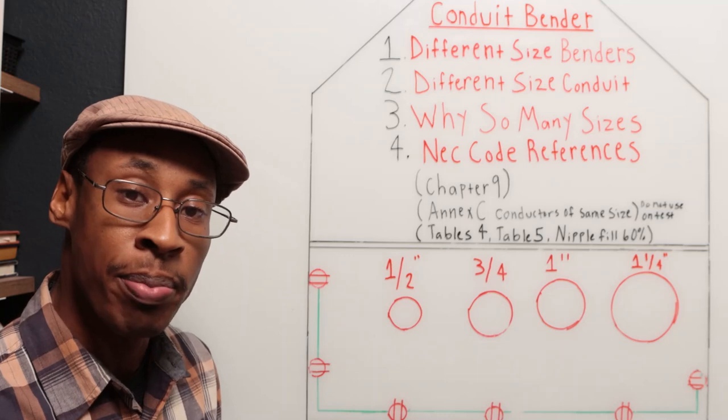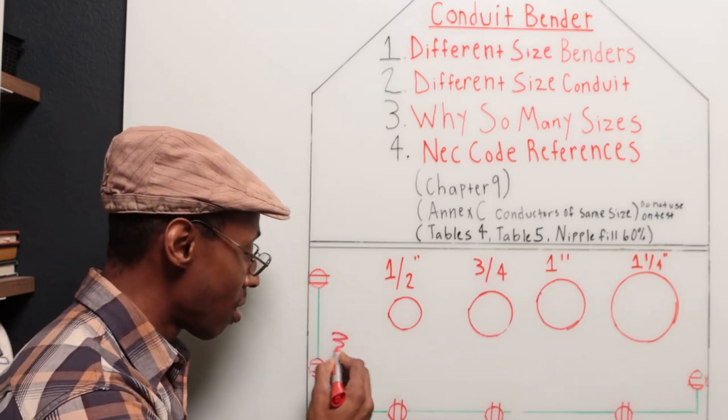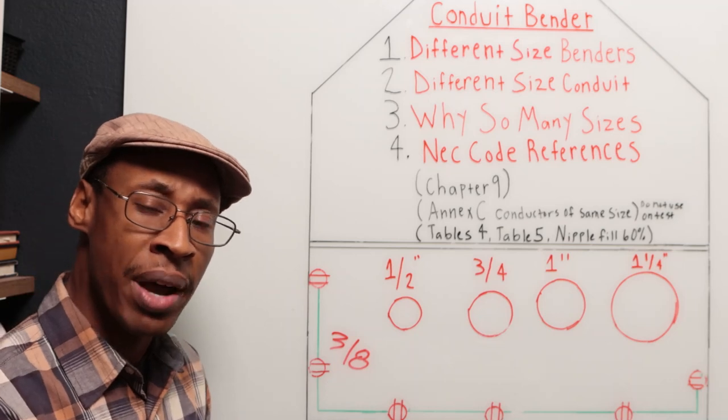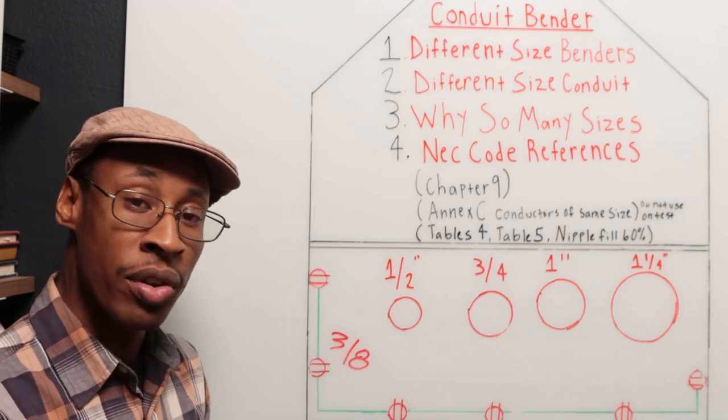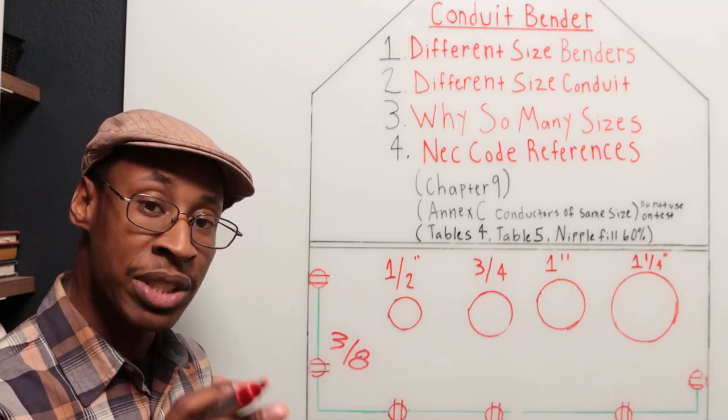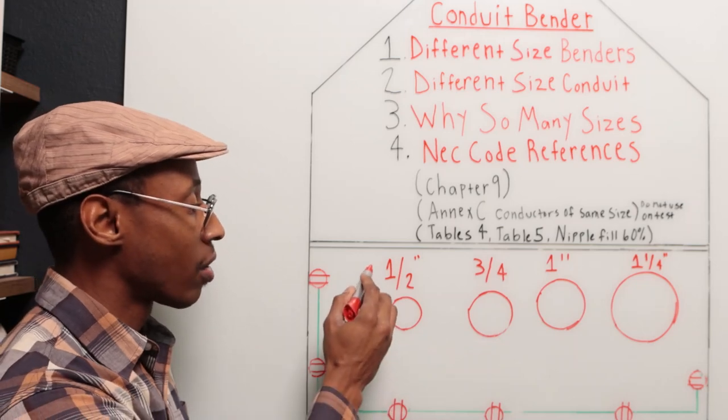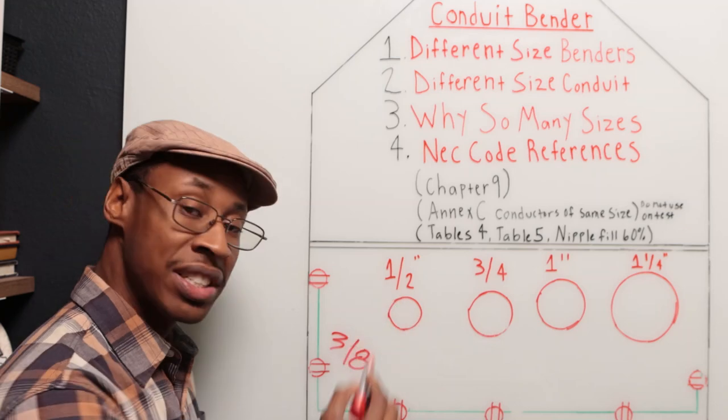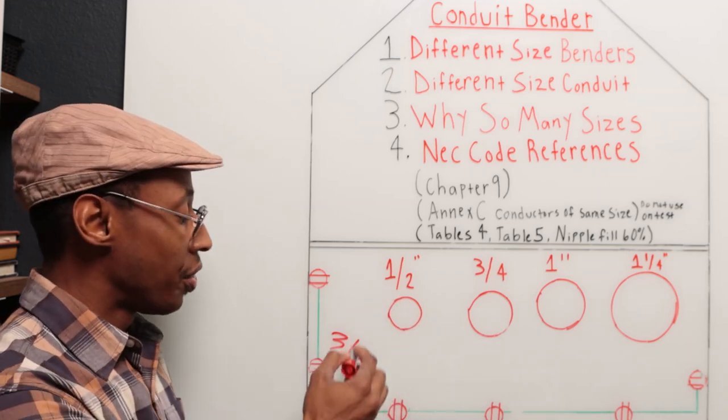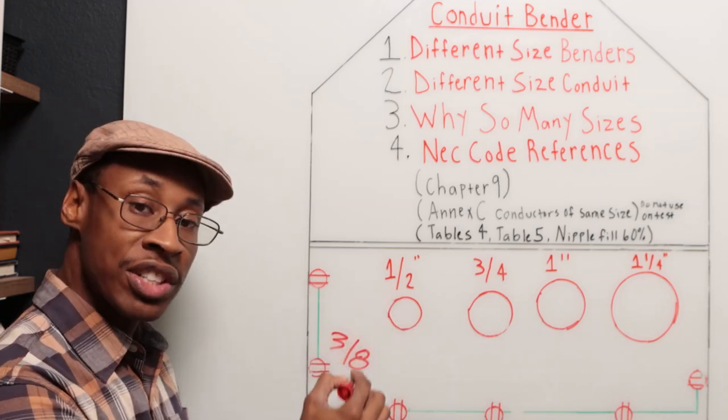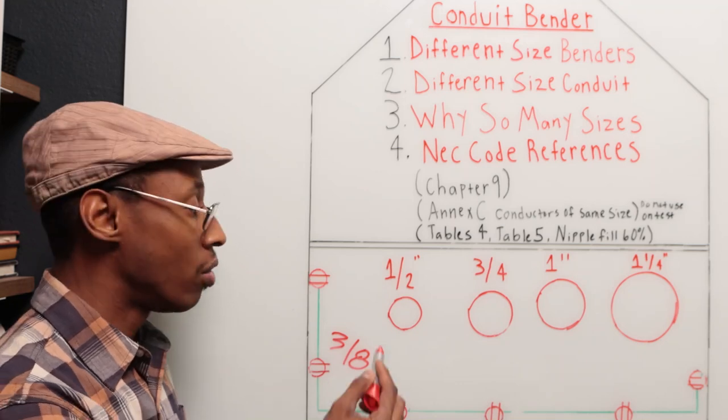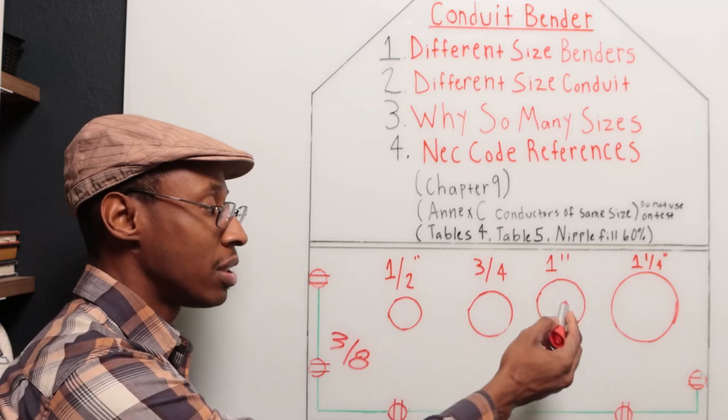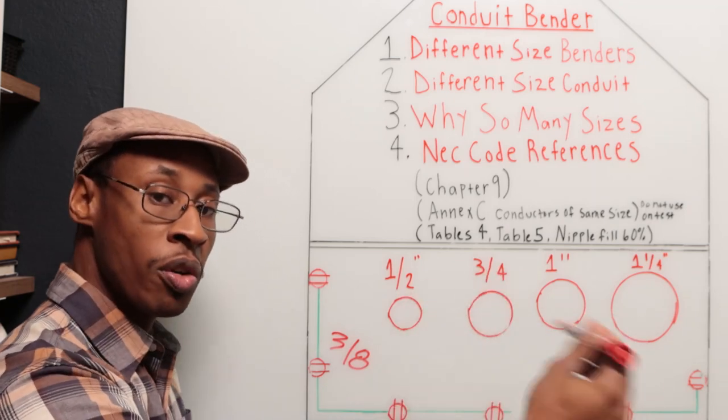So if anybody comes to you on the job site and tells you, hey, go get me that three eighth piece of pipe. Don't let them pull that trick on you because EMT or conduit starts at half inch size. Three eighths is below half inch on the ruler or a tape measure. So it's going to go half inch, three quarter, one inch, inch and a quarter and so on and so forth.